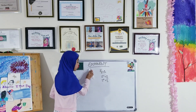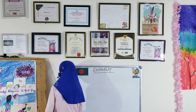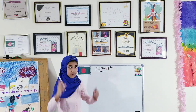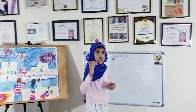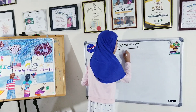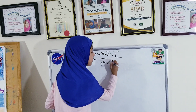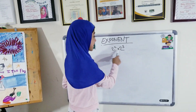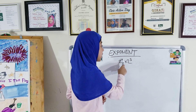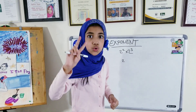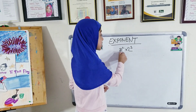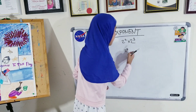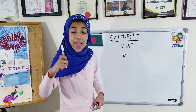Now I'm going to show you another rule, and that rule is the multiplication or the product rule. That rule is that, for example, we have 2 to the power of 2 times 2 to the power of 3. What we will do is keep the base the same, and then add these two exponents, which is 2 plus 3, and that is going to be 5. So it's 2 to the power of 5.